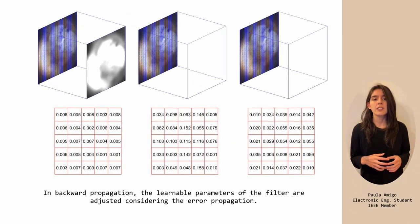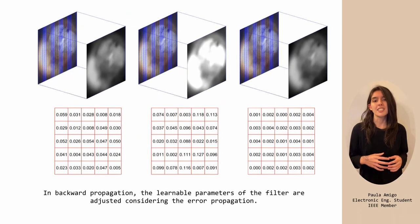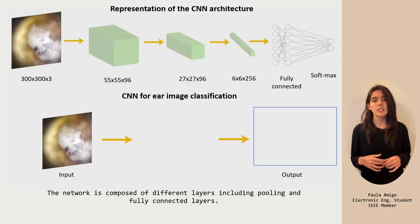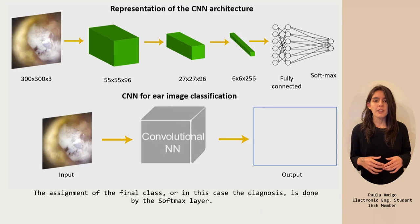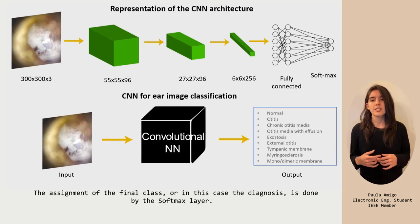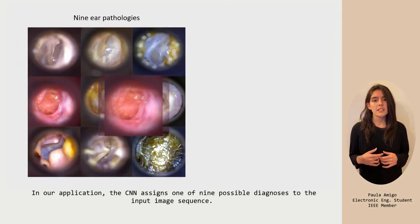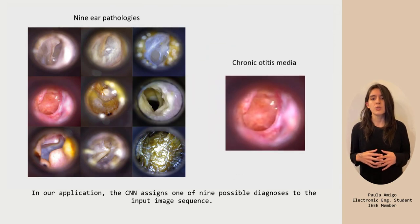In backward propagation, the learnable parameters of the filter are adjusted considering the error of propagation. The network is composed of different layers, including pooling and fully connected layers. The assignment of the final class, or in this case the diagnosis, is done by the softmax layer. In our application, the CNN assigns one of nine possible diagnoses to the input image.